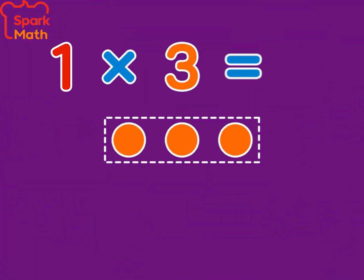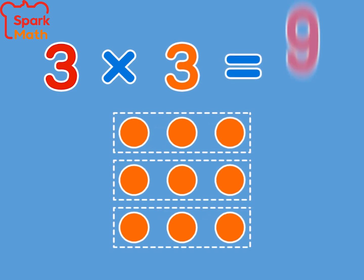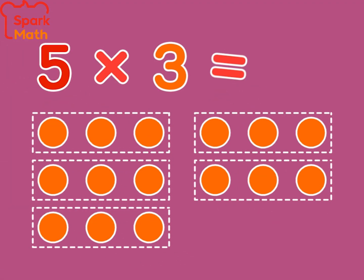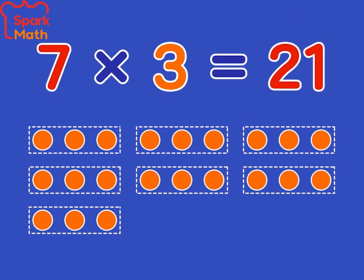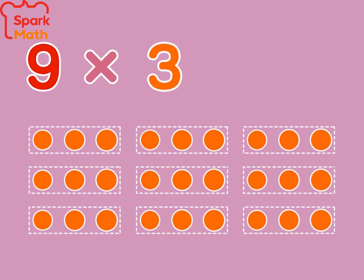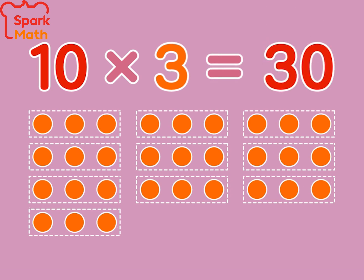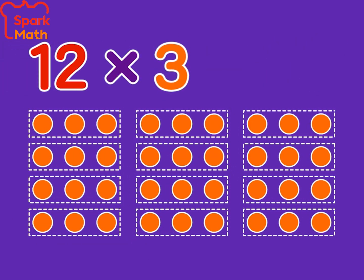1 x 3 is 3, 2 x 3 is 6, 3 x 3 is 9, 4 x 3 is 12, 5 x 3 is 15, 6 x 3 is 18, 7 x 3 is 21, 8 x 3 is 24, 9 x 3 is 27, 10 x 3 is 30, 11 x 3 is 33, 12 x 3 is 36.